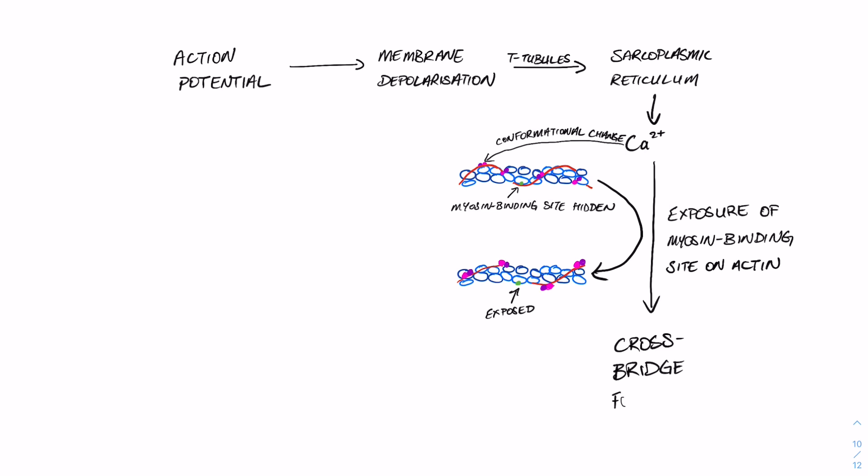And when that myosin binding site on the actin filament is exposed, we can form a cross bridge. Now the cross bridge is really just the myosin head binding to that exposed myosin binding site on actin. So the cross bridge is basically actin and myosin bound together, and that's only possible when calcium is present to expose that binding site.